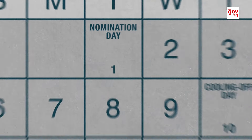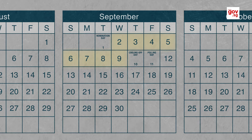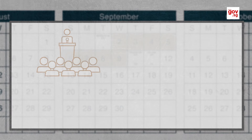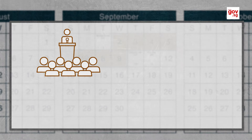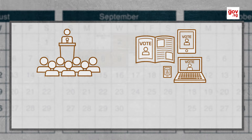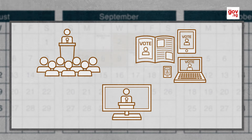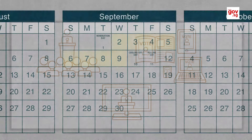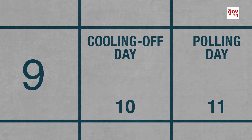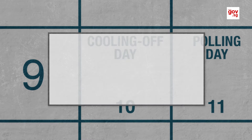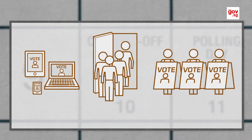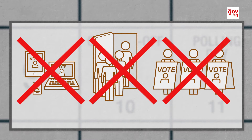Candidates may start campaigning from the close of nomination day until one day before polling day. Campaigning activities may include rallies, online and offline advertising, and limited airtime given by TV stations. The day before polling day is called the cooling off day, during which active campaigning both online and offline is prohibited.